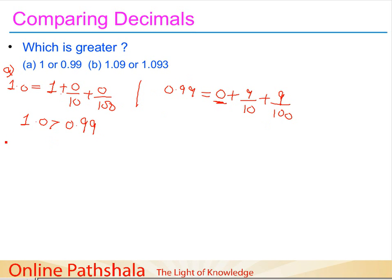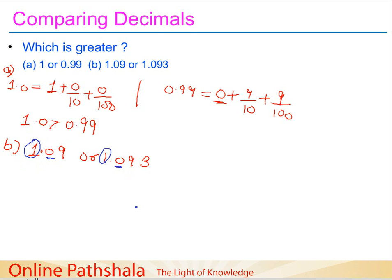There's one more, and in my opinion the simplest and easiest way to compare decimals. What we do is take the whole part first. Here the whole part is 1, and here also the whole part is 1 — they are the same, so we can't determine which is greater from the whole part. We then go to the tenths place: here I have zero, and here also zero — still unable to find out. So I go to the hundredths place: here it's nine, and here also nine.